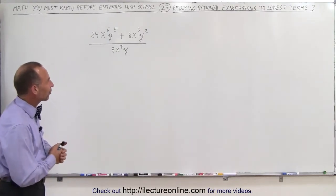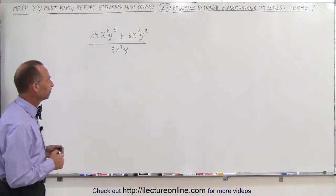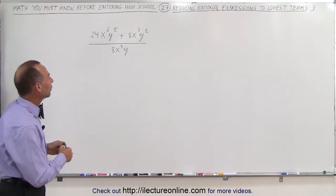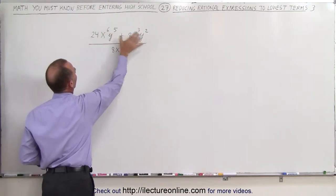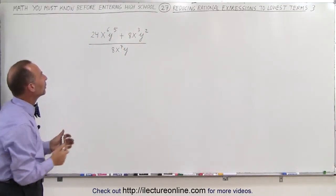Welcome to ElectronLine, and here's our next example of how to reduce a rational expression. Notice that in the numerator we have a plus. That means we have two terms, and let's see if we can factor out whatever is common between the two terms.